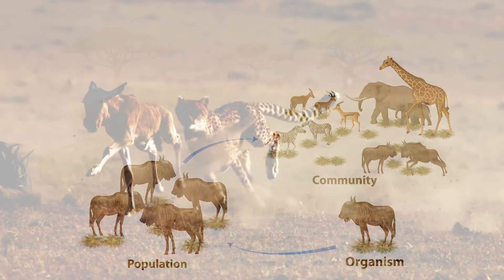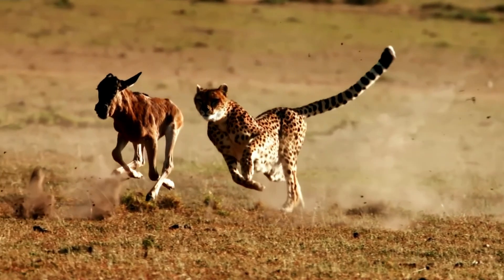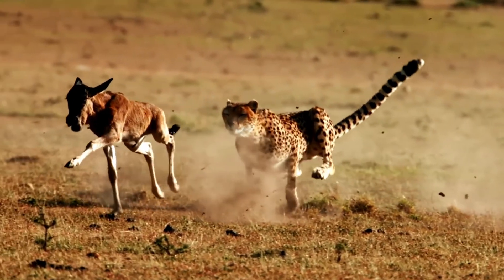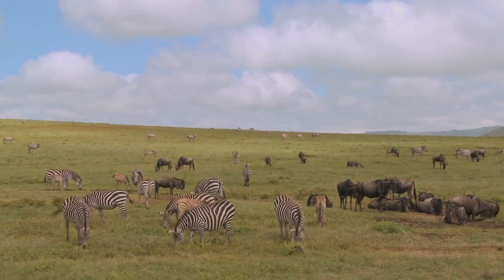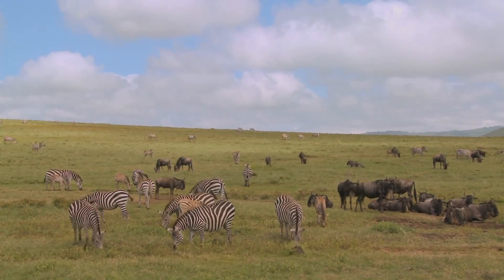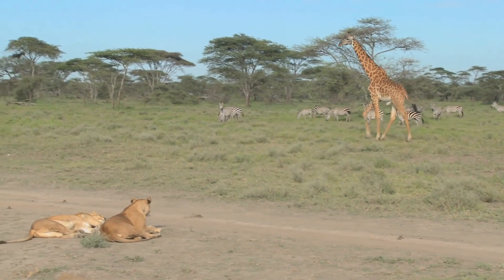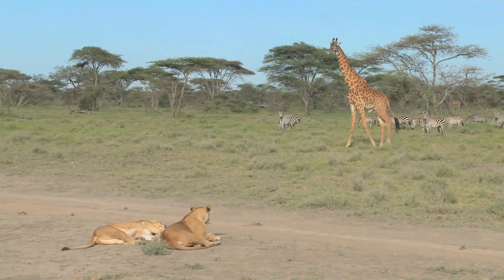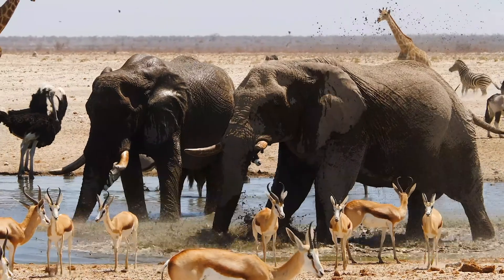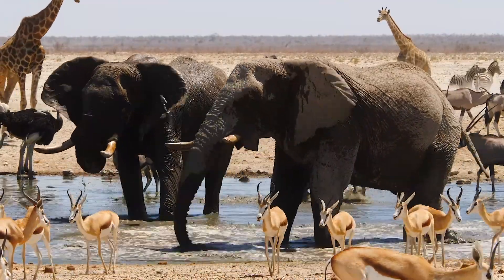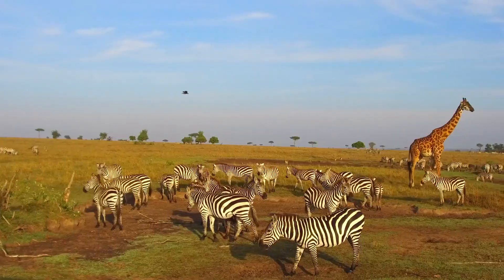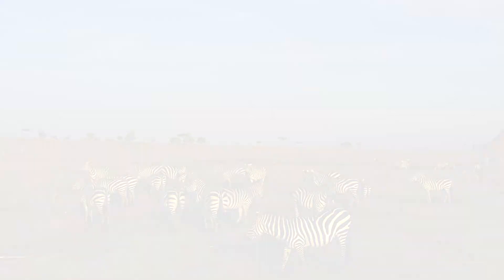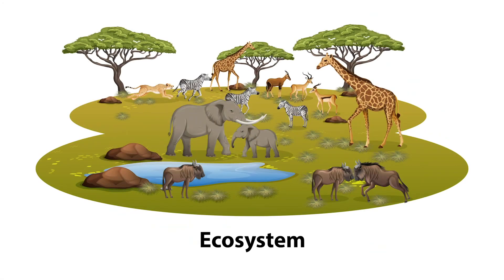The community and the interactions with the nonliving components of their surroundings make up the ecosystem. The interactions between the gazelles, zebras, lions and other organisms with the air, soil, water and other nonliving things make up the African grassland ecosystem.